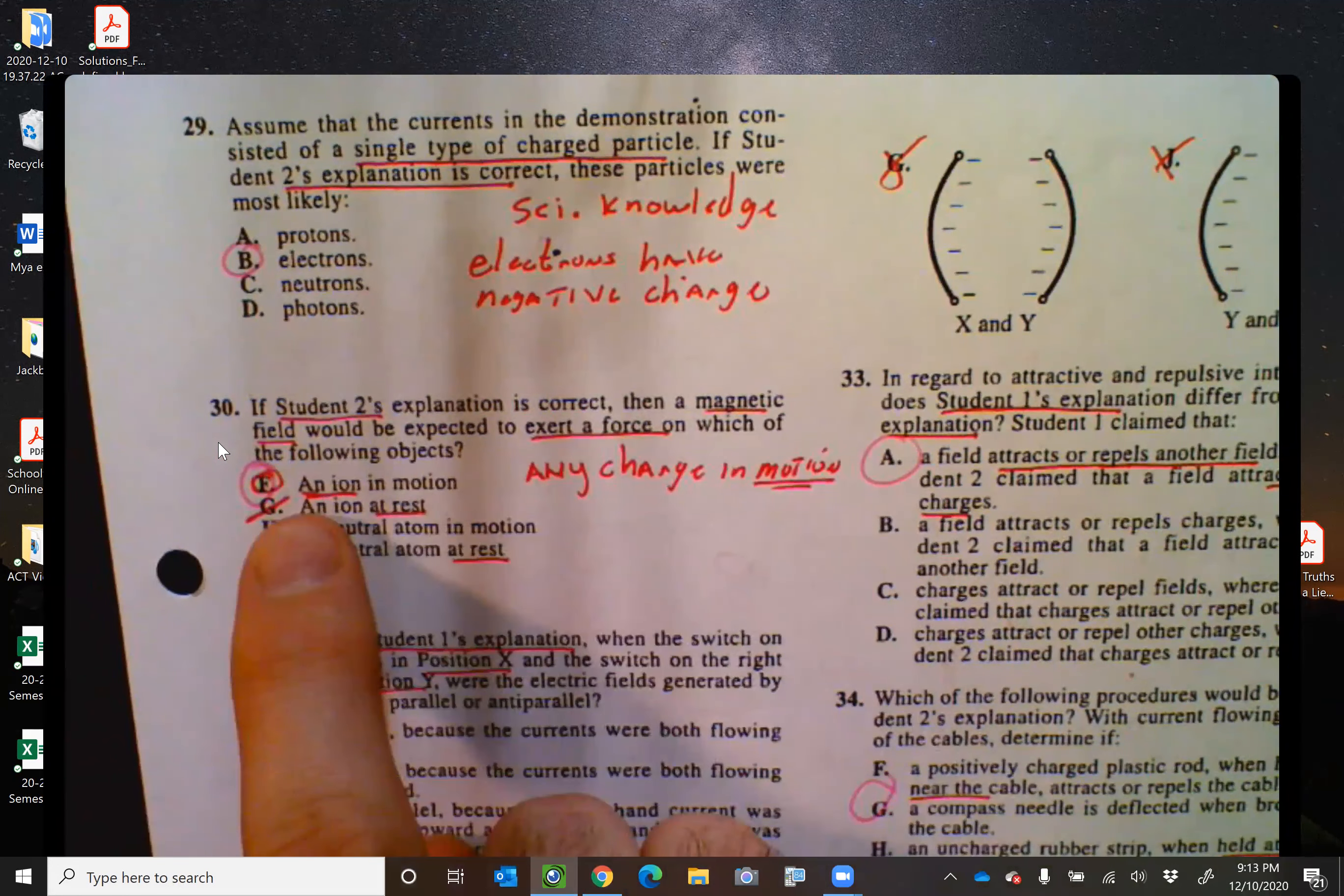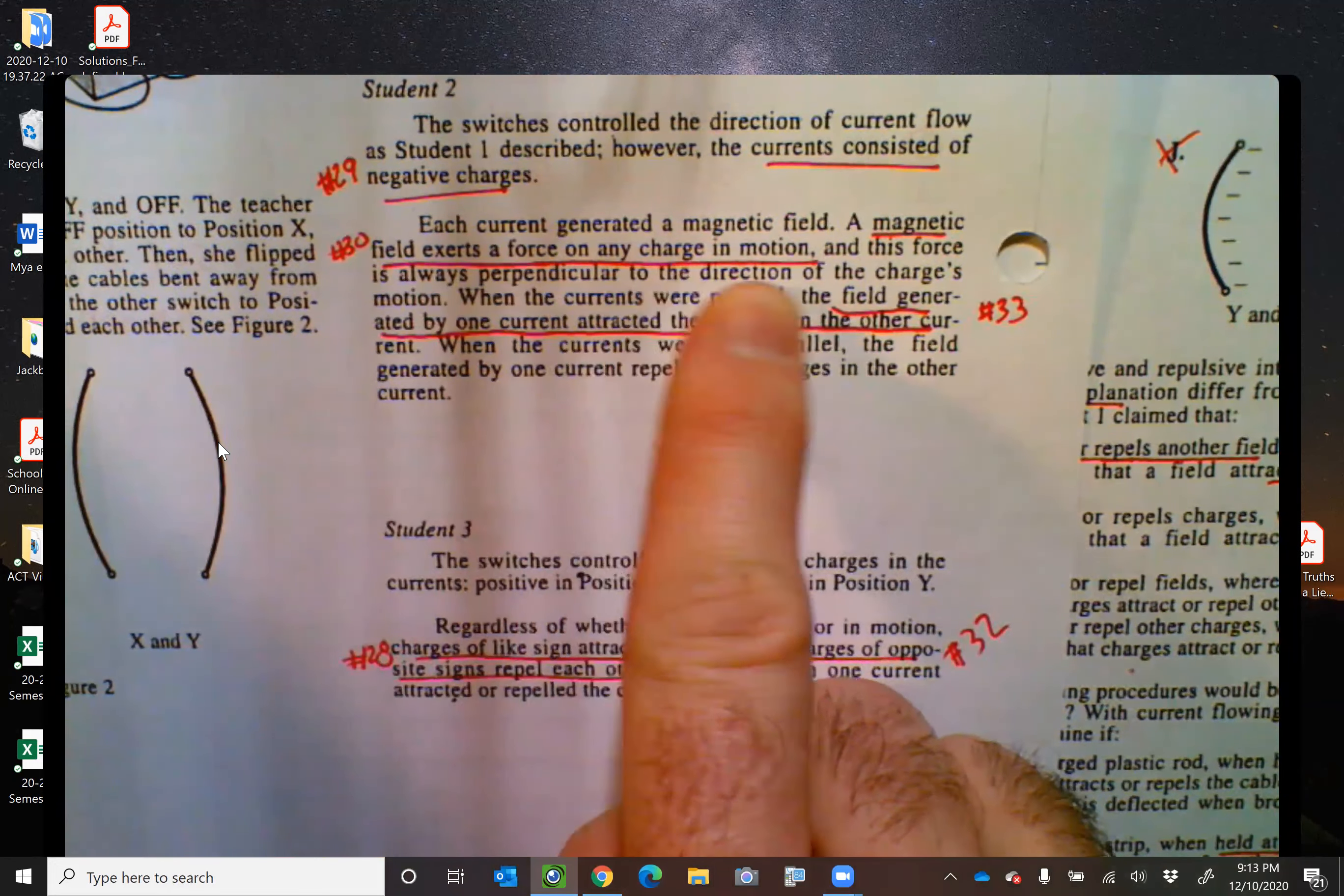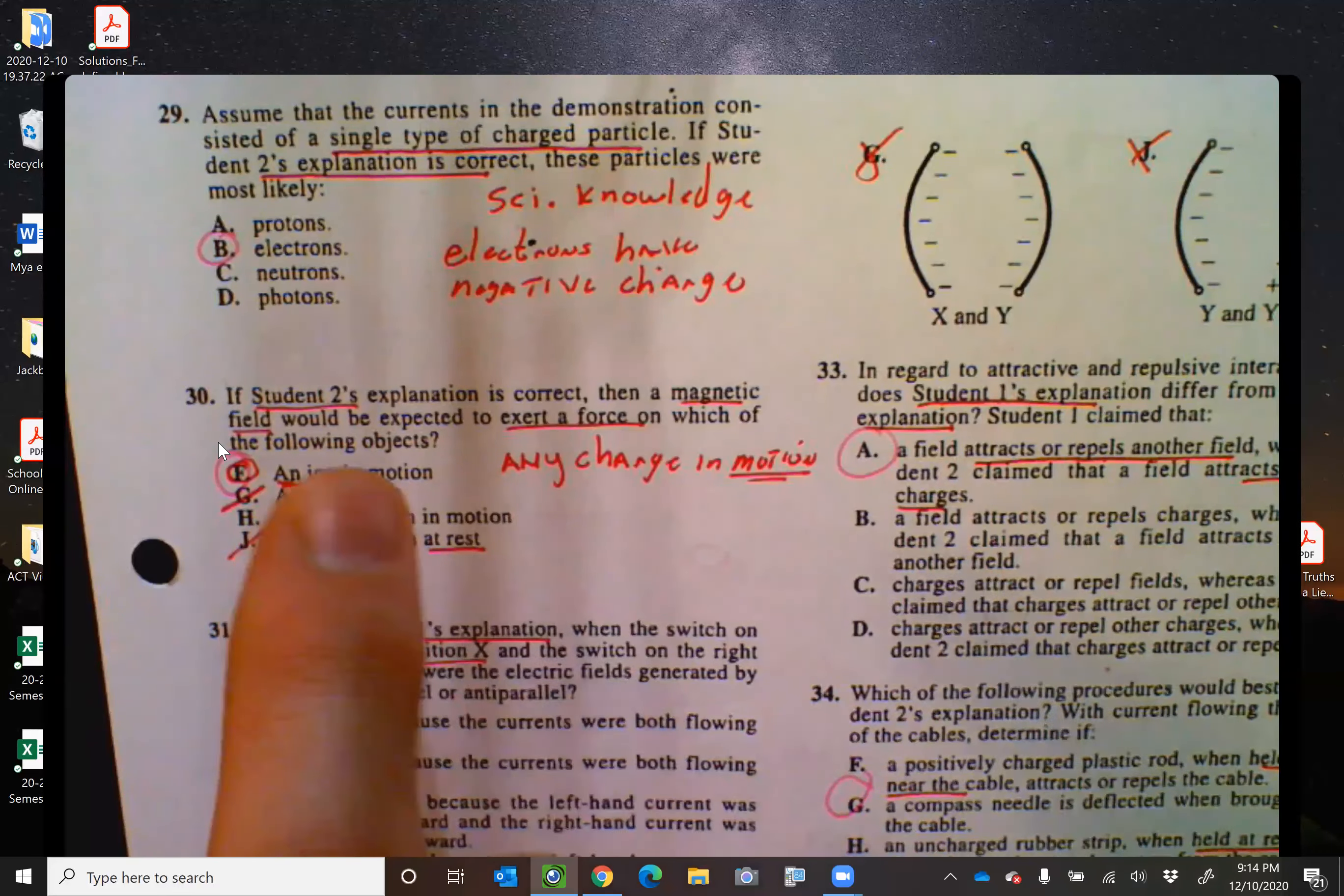Number 30. If student two's explanation is correct, a magnetic field would be expected to exert a force on which of the following objects: an ion in motion. Now, if we look at it, we'll see in student two says right here, a magnetic field exerts a force on any charge in motion, any charge in motion. So the key is must be in motion. Well, H, a neutral atom in motion. That's not a charge, but it is in motion. It's got to be letter F. That's a charge. An ion means you have a charge and you are in motion.